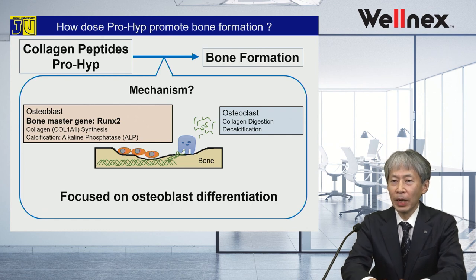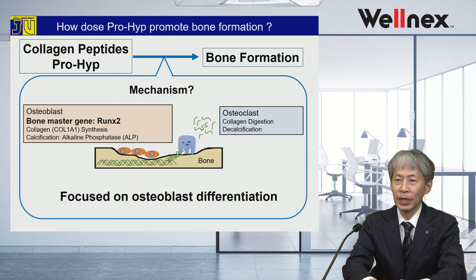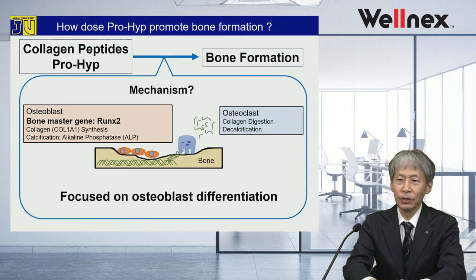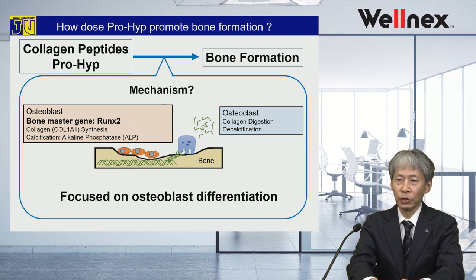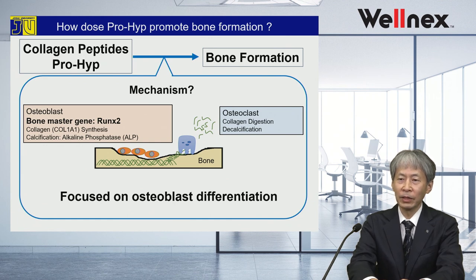Collagen peptide, especially prolyl hydroxyproline, induced bone formation, but the molecular mechanism was unknown. Bone formation is induced either by activation of osteoblasts or inactivation of osteoclasts. First, we studied the effect of prolyl hydroxyproline on osteoblast differentiation. In addition, we focused on the osteoblast master gene RUNX2, and we used the osteoblast cell line MC3T3-E1 cells.